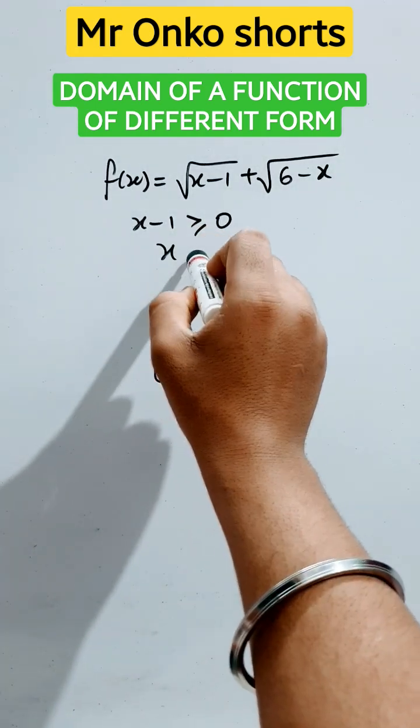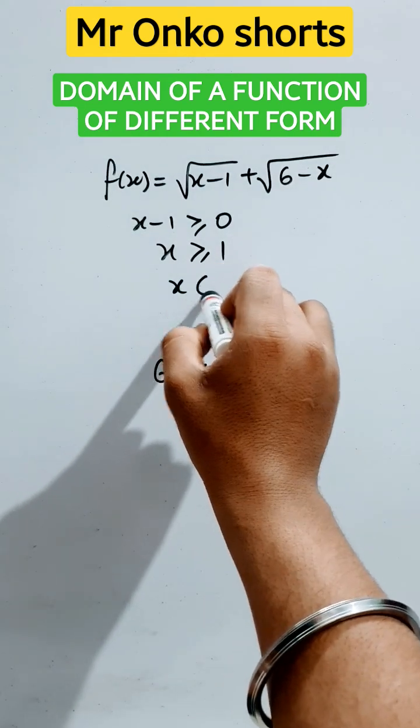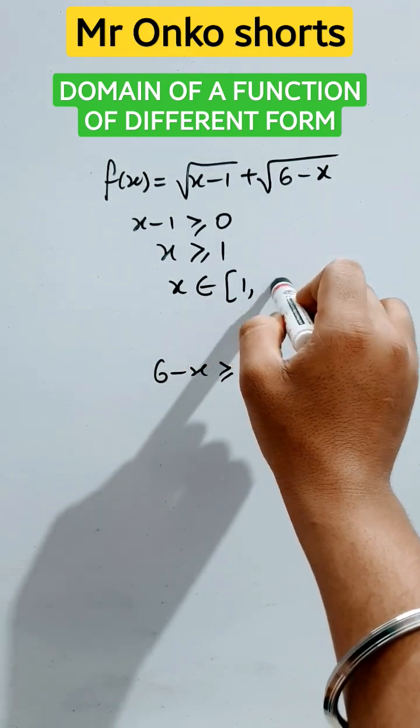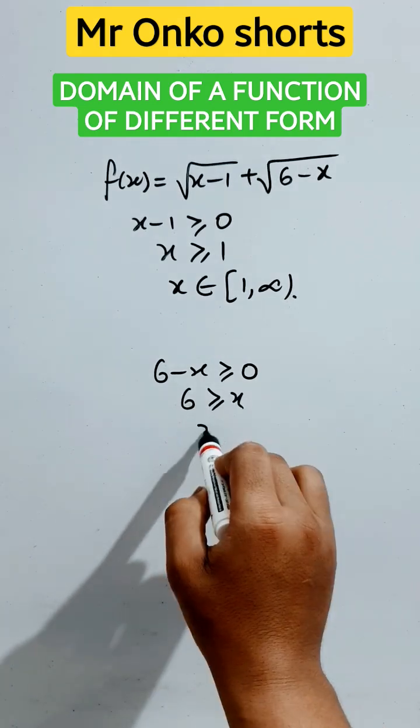So from here we get x greater than or equal to one, so x belongs to one and its larger values, so closed one to infinity. And here six is greater than or equal to x, so x is less than or equal to six.